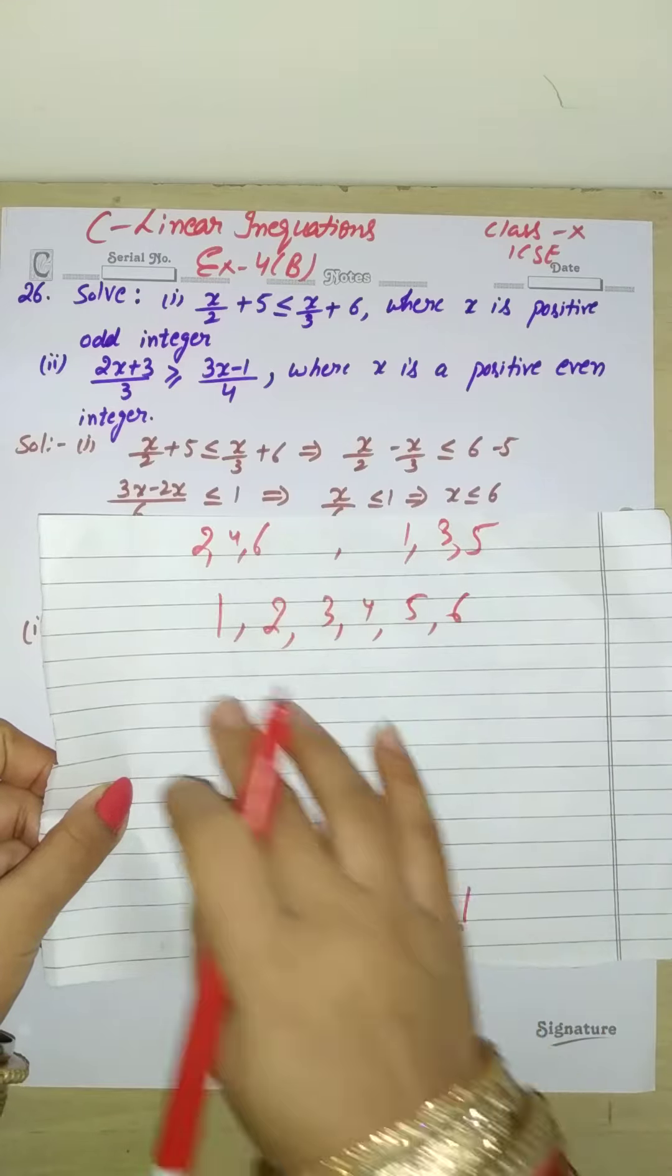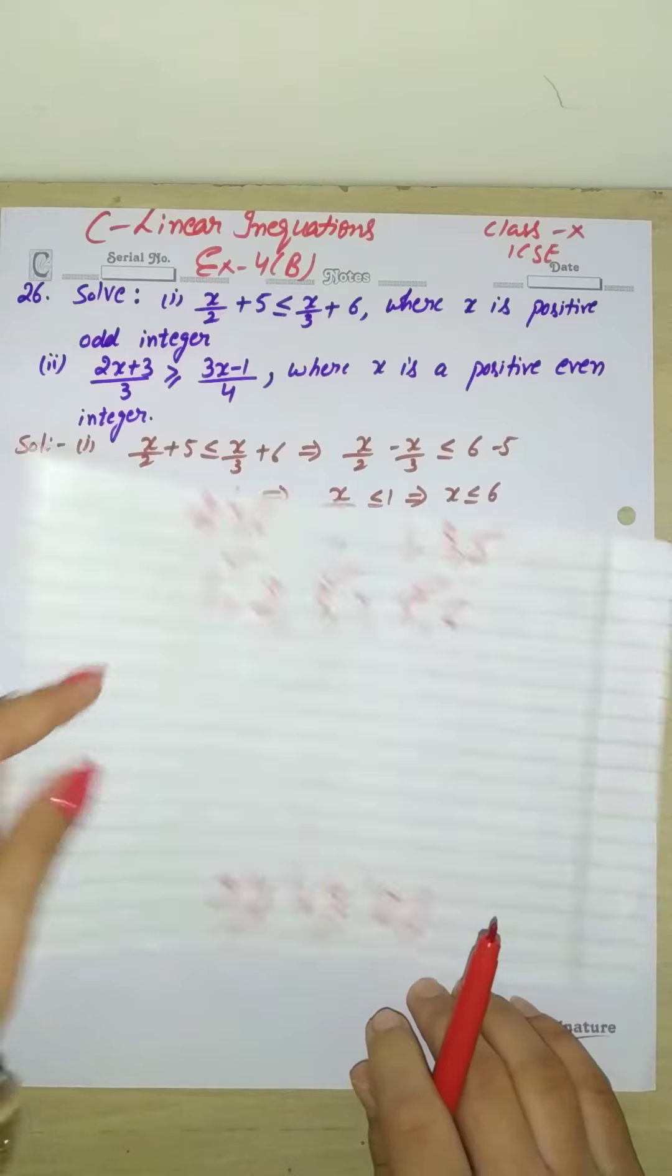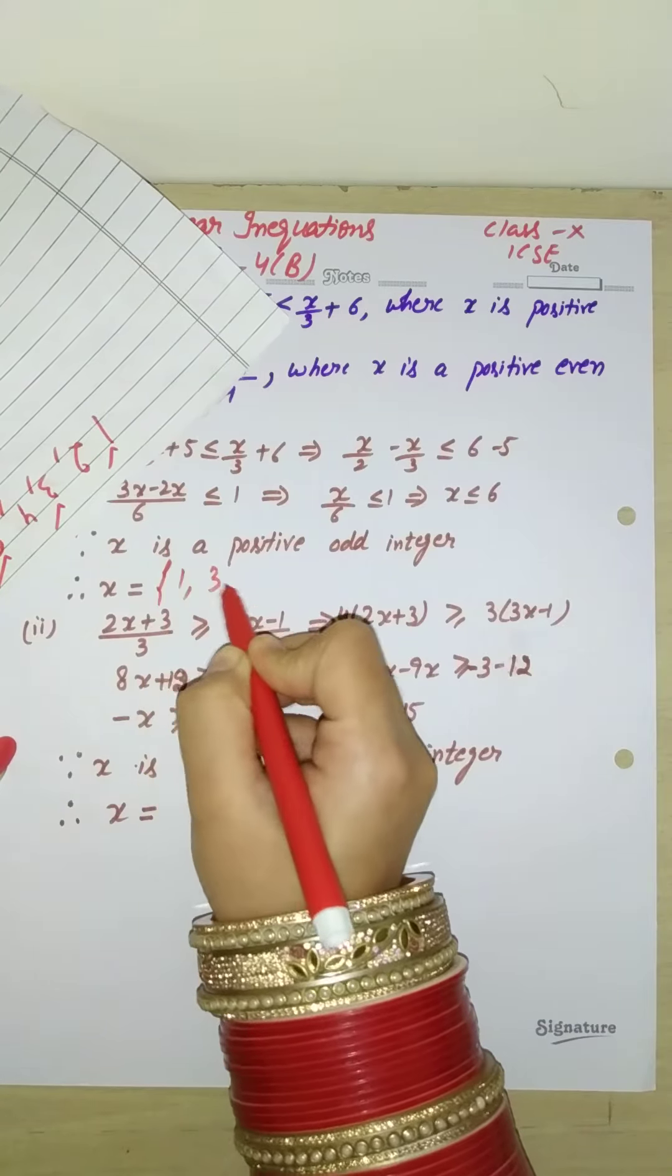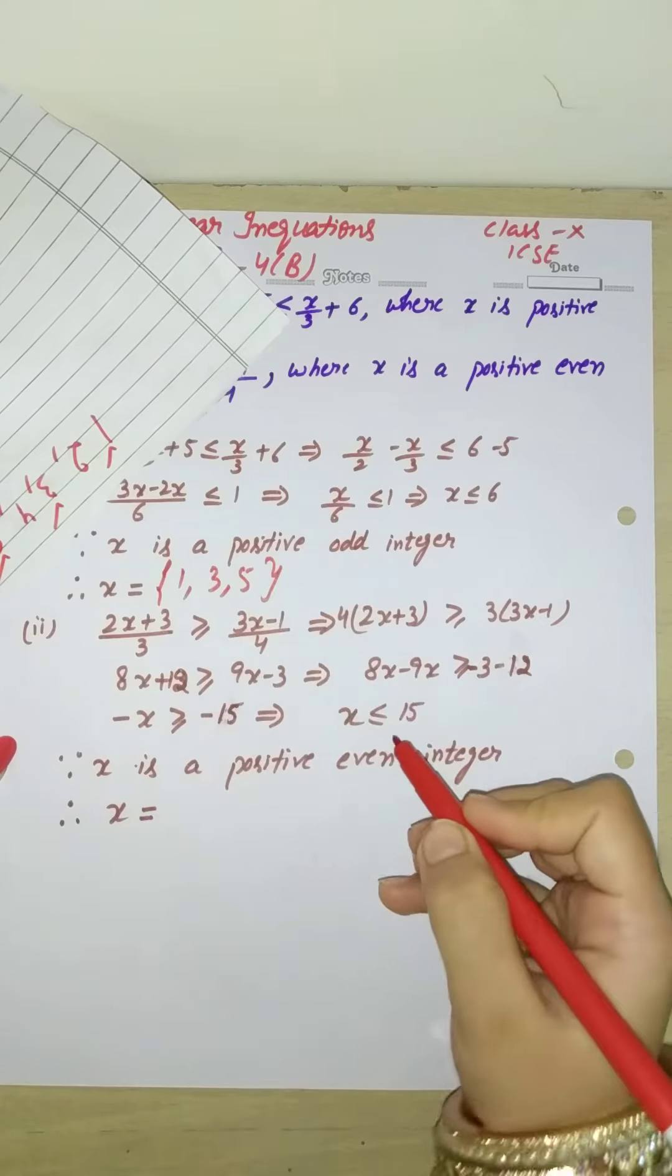So which ones are odd? 1 is one, then 3, and then 5. So that means what answer will come? You will have 1, 3, and 5. This is the solution set.